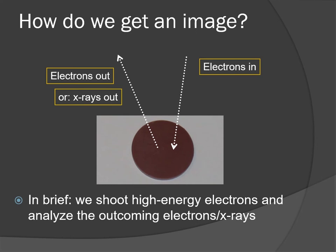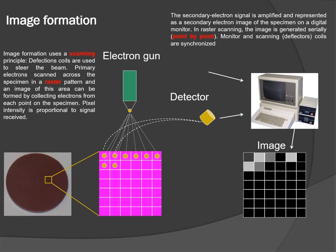How do we get an image? Simply: electrons in, electrons out or X-rays out. We shoot high-energy electrons and analyse the resulting electrons or X-rays. Image formation uses a scanning principle: deflection coils steer the beam, and primary electrons scan across the specimen in a raster pattern. An image is formed by collecting electrons from each point on the specimen. Pixel intensity is proportional to the signal received, and the secondary electron signal is amplified and displayed as an image on a digital monitor. The image is generated serially, point by point, with the monitor and scanning deflector coils synchronized.